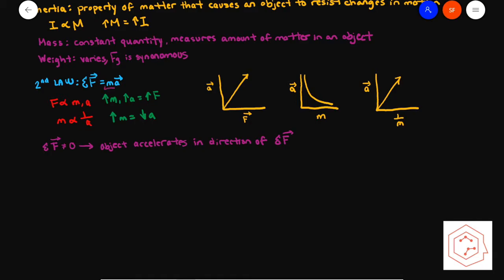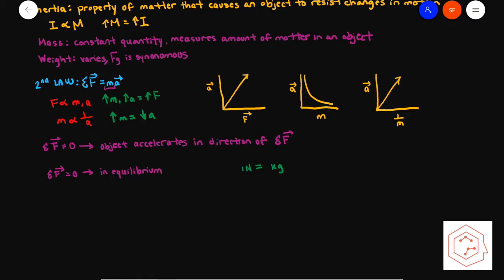We know this because mass is a scalar quantity and has no direction. When the external net force is zero, the object is in equilibrium because all forces balance out — this means the object is at rest or traveling at constant velocity. Since F equals MA, the SI unit for force is the Newton. The SI unit for mass is kilograms, and acceleration is meters per second squared, so one Newton equals one kilogram·meter per second squared.